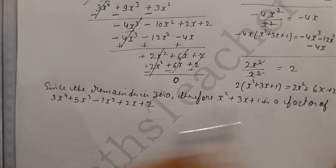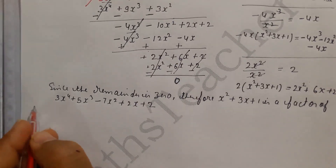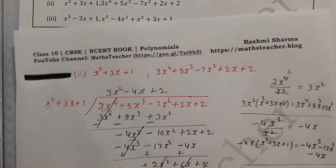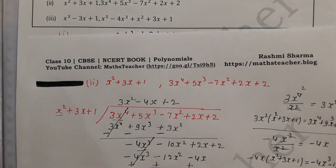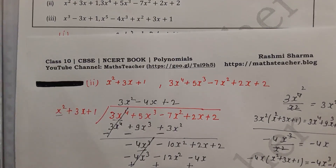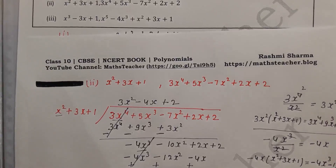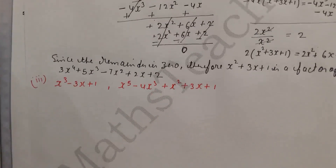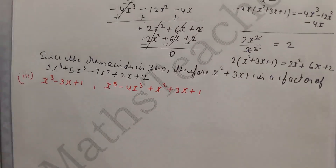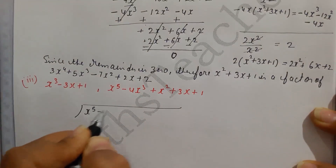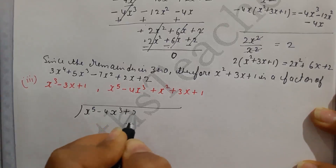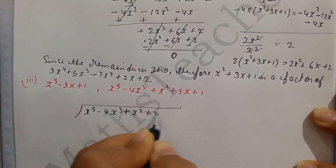Now let's solve the third part. We have to check whether x³ minus 3x plus 1 is a factor or not. Our first polynomial is x³ minus 3x plus 1 and the second polynomial is x⁵ minus 4x³ plus x² plus 3x plus 1. We have to divide and check.